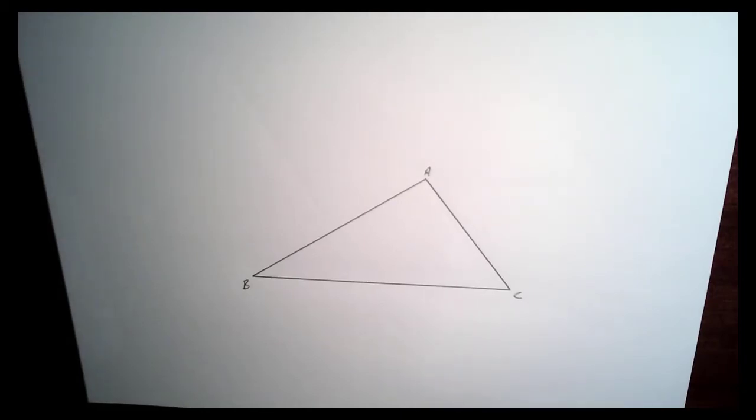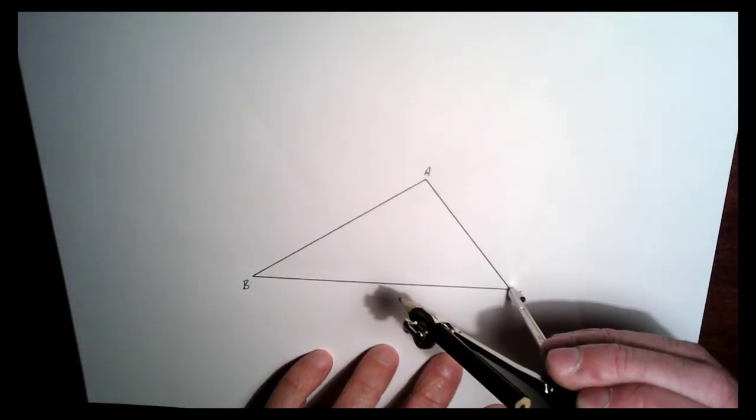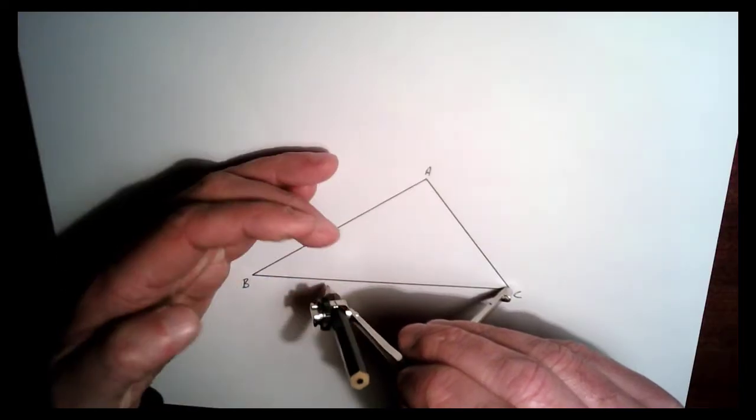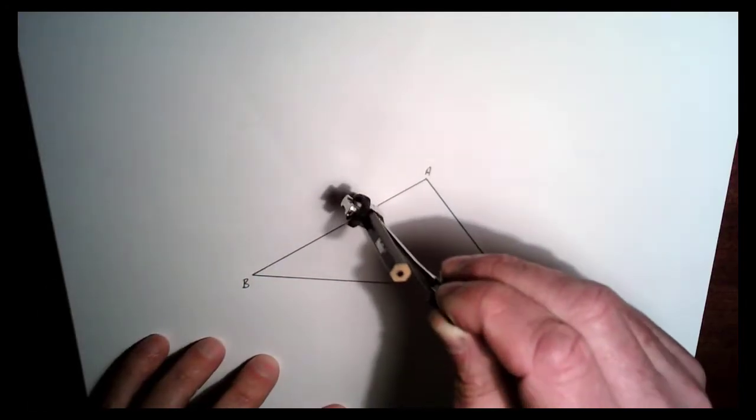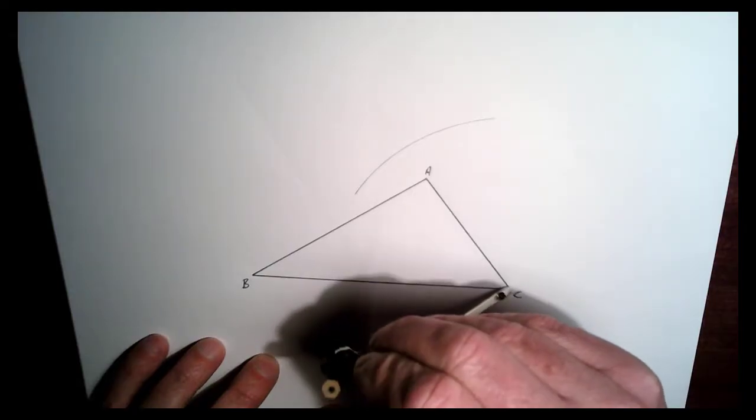Okay, so in this video I'm going to construct a circumcenter and a circumcircle of this triangle here, ABC. So the first thing we're going to do is take our compass, place it at C here, and we'll take the pencil and bring it more than halfway out along BC. We're going to draw an arc up here and an arc down here.